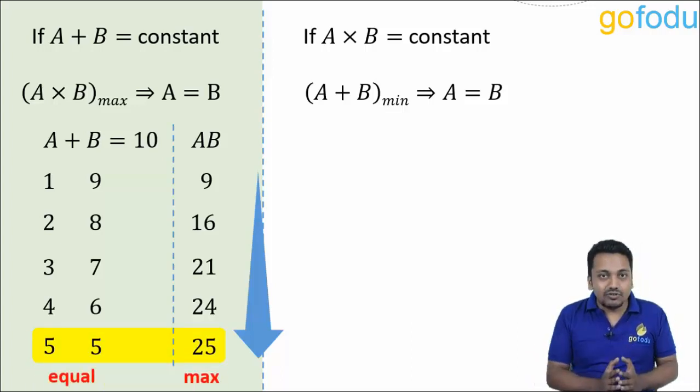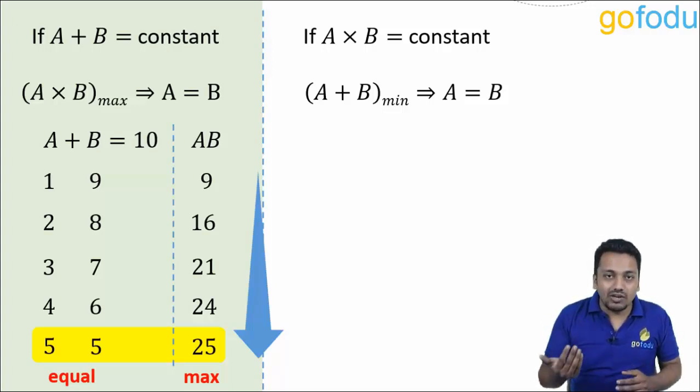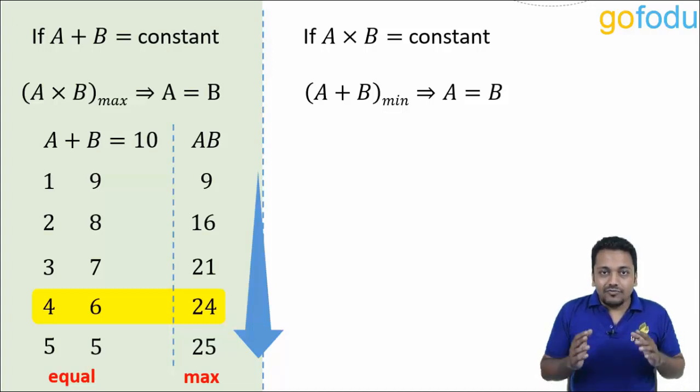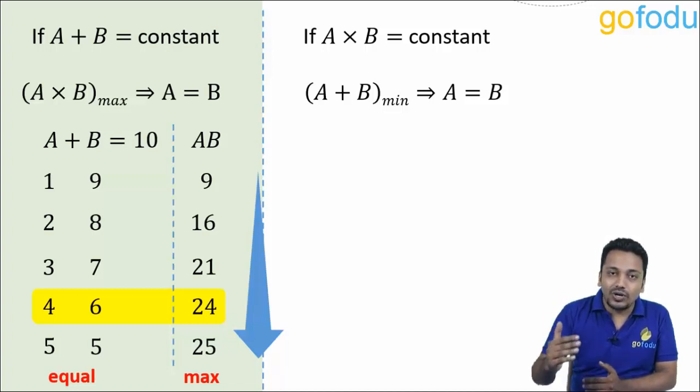If it is given in the question that numbers cannot be equal, then the next maximum will occur when the numbers are as close as possible. They should be as close to each other as possible. If A and B are non-negative integers, then the next maximum will occur when they are 4 and 6.